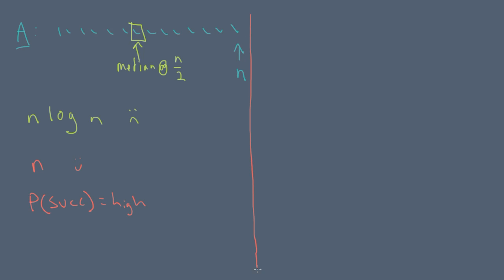In order to analyze the randomized algorithm, we're going to need two results from basic probability theory. The first result is the concept of the binomial random variable. If we flip a coin n times and the probability of getting a head in a coin flip is p, the binomial probability distribution tells us the probability of getting exactly k heads in the experiment. The binomial random variable can be thought of as counting the number of heads in a coin flipping experiment.